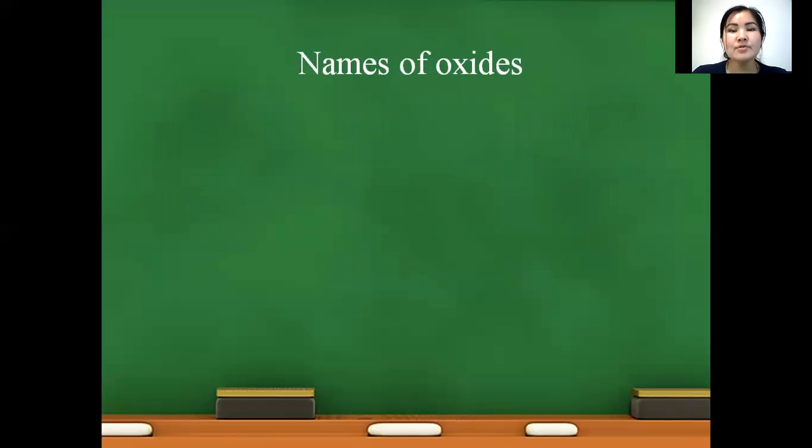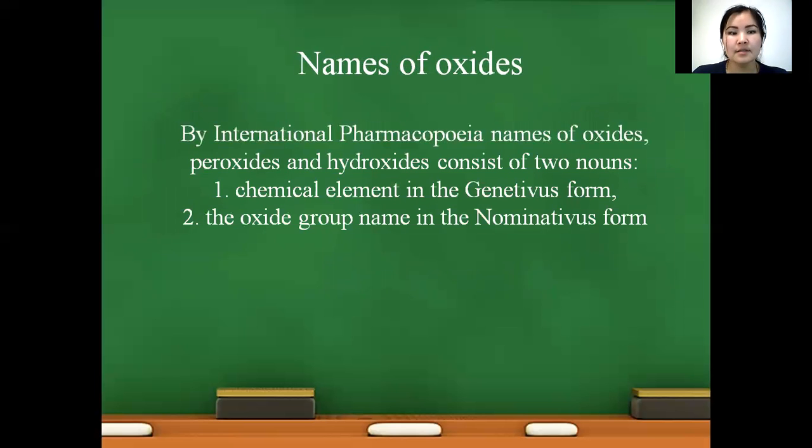Names of oxides. By international pharmacopoeia, names of oxides, peroxides, and hydroxides consist of two nouns. First, chemical element in genitivus form. And second, oxide group name in nominativus form.